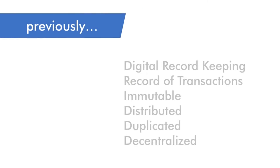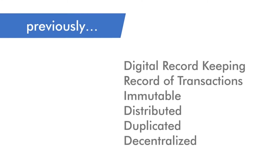In the last episode, we took a look at blockchain and learned that it's really a digital record-keeping system. In it, the record of transactions are immutable, distributed, duplicated, and decentralized.